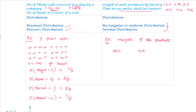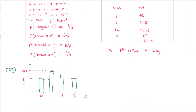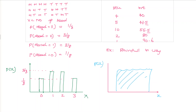For a continuous random variable example, consider the weight of students. One student weighs 41.5 kg, another 51.5 kg, another 50.5 kg, another 80 kg, and another 90.6 kg. These are decimal values — this is a continuous random variable. Another example is rainfall in a city. We plot a graph where x is the number of students and P(x) is the weight. This is a continuous variable, as opposed to a discrete variable.